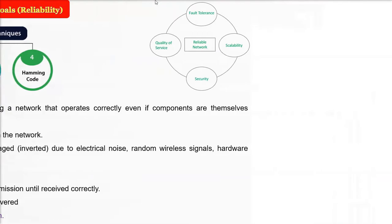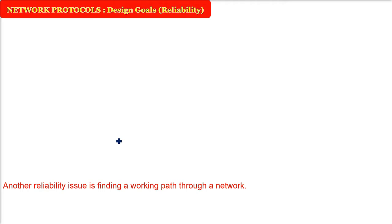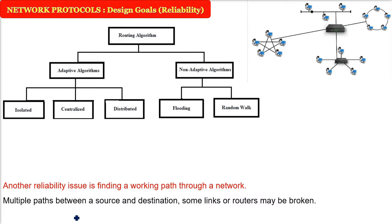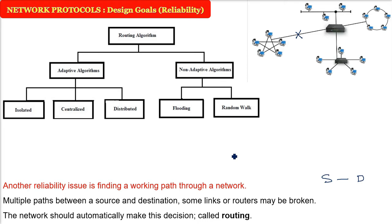Another issue under reliability is how to find a path through a network. A network has multiple paths - how does a packet go from one place to another? Some links, routers, or machines may be broken, so the network should automatically make decisions based on certain algorithms - this is called routing.